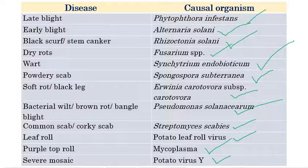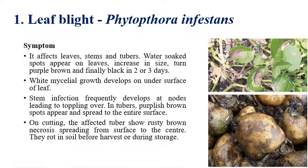Now we'll see in detail about each disease. The first one is late blight, which is caused by Phytophthora infestans. This disease has great historical importance — it led to the initiation of plant pathology as a new branch and division. The life cycle of this disease was identified by Anton de Bary, who is considered the father of plant pathology.